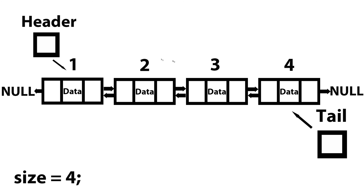So from here, you can see we have our doubly linked list. And all that's different that you might notice is that now we have positions. So this is position one, two, three, and four. Now from here, there are several test cases that we should consider.